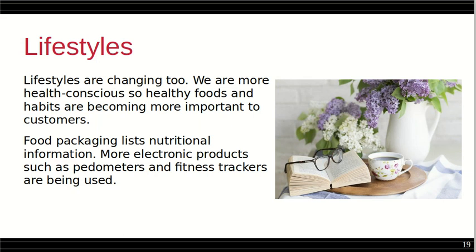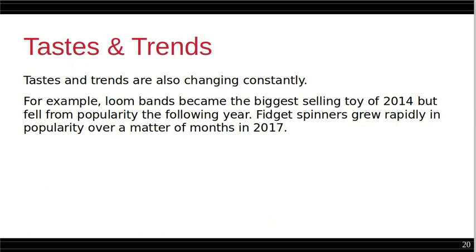Lifestyles are changing too. We are more health conscious, so healthy foods and habits are becoming more important to customers. Food packaging now lists nutritional information, and more electronic products such as speedometers and fitness trackers are being used. Tastes and trends are also changing constantly. For example, loom bands became the biggest selling toy of 2014 but fell from popularity the following year, and fidget spinners grew rapidly in popularity over a matter of months in 2017.